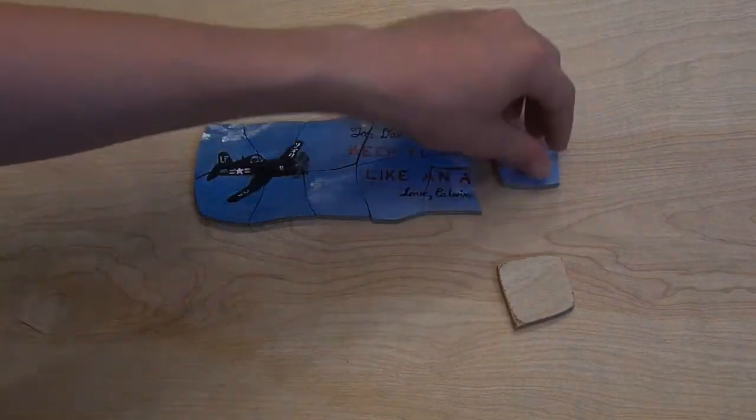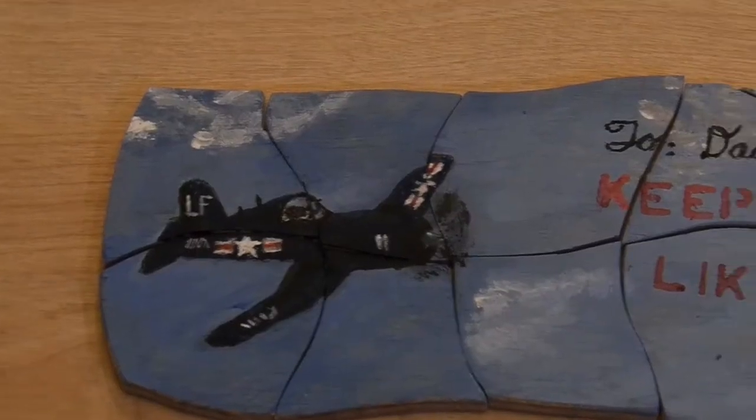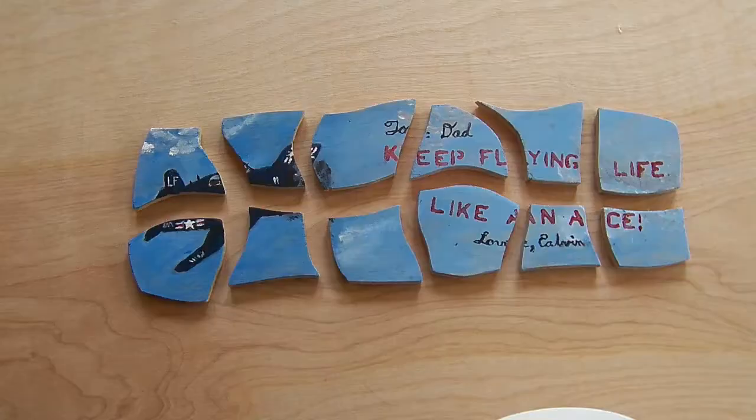Back to the main point, you'll notice that I painted the plane in F4U Corsair. After I had finished the plane, I had to come up with a nice saying for my dad, keep flying life like an ace.